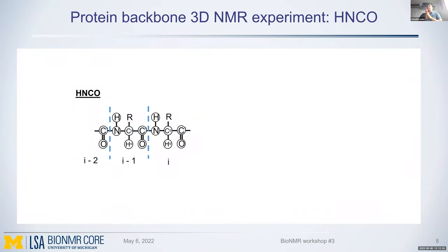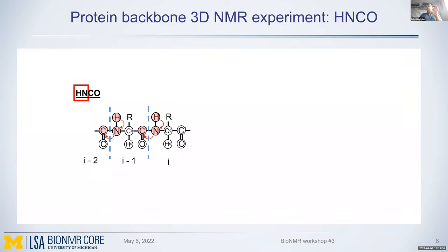The first experiment is HNCO. You can think of it like walking through the atoms in question: H is the amide hydrogen, N is the amide nitrogen, and CO is the carbonyl carbon. You start with hydrogen magnetization, transfer it to nitrogen - that's the HN part, corresponding to the HSQC. Then you do another step, transferring the magnetization to the carbonyl carbon, and put the magnetization back to nitrogen and back to hydrogen. This is a simple out-and-back HNCO experiment.